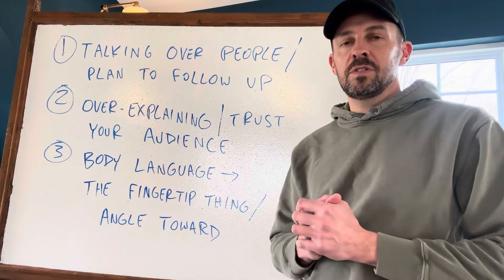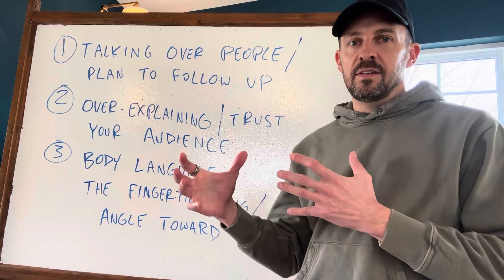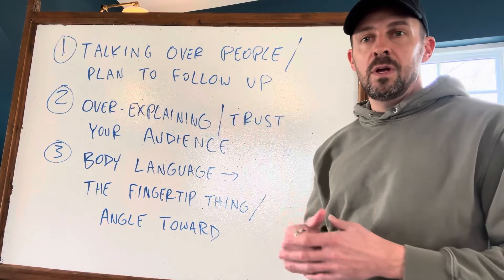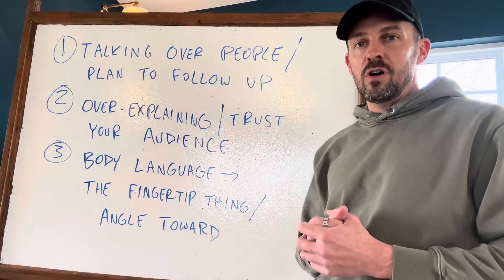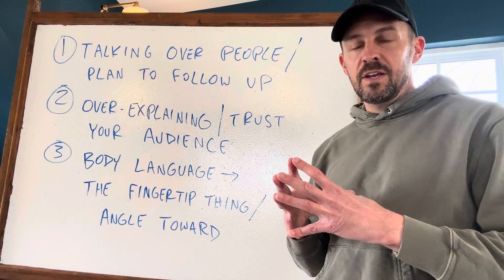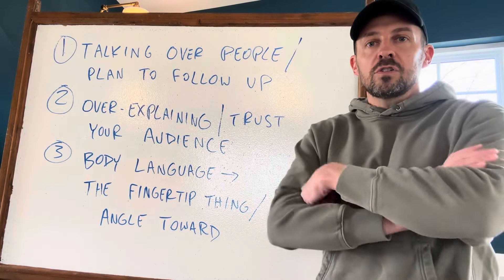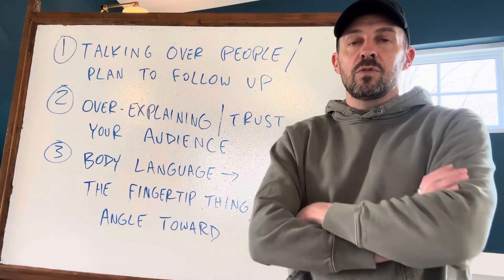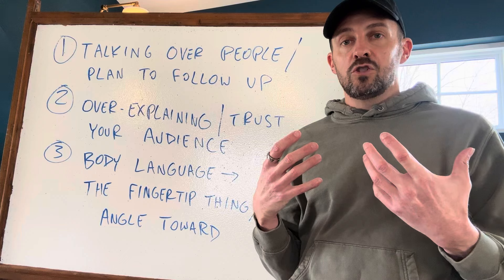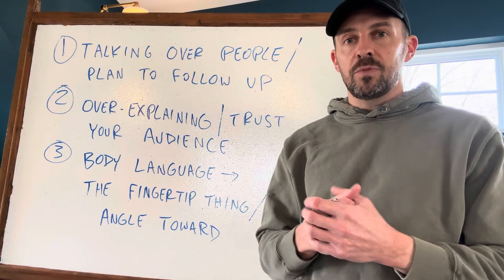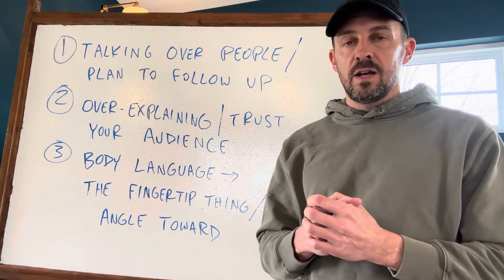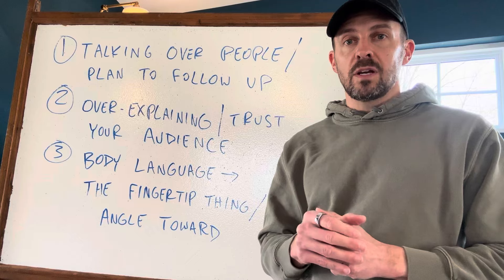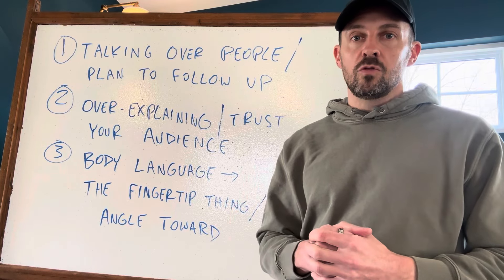So there you have it — three tips to help you cultivate executive presence by avoiding these short circuits. Short circuit one: talking over people — instead, plan to follow up. Short circuit two: over-explaining — instead, trust your audience. Short circuit three: the body language fingertip thing — instead, angle toward. Gather awareness about these things when engaging with your team, and use these tactics to present in a more relaxed, confident, capable, in-the-driver's-seat way. Also, 'A Failure of Nerve' by Edwin Friedman — I put a link in the description — is highly recommended. I hope this helps you in your journey to grow as a leader.